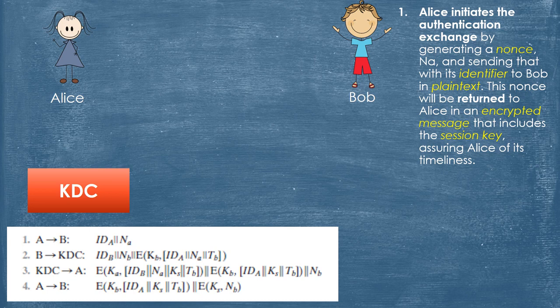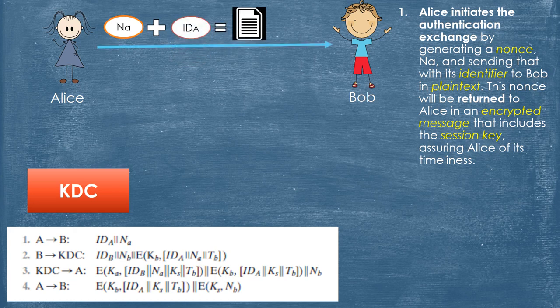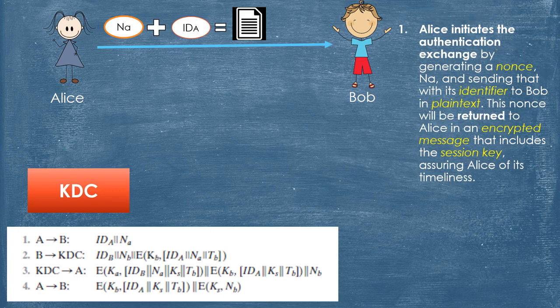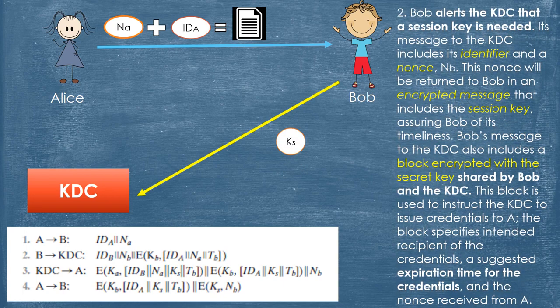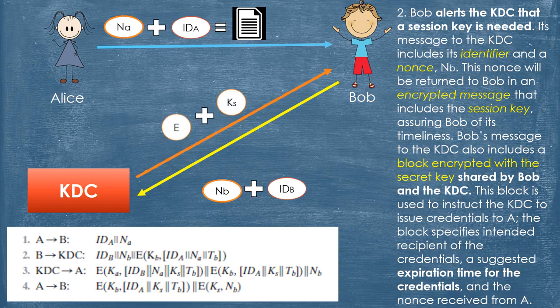Step 1: Alice initiates the authentication exchange by generating a nonce and sending it with her identifier to Bob in plain text. This nonce will be returned to Alice in an encrypted message that includes the Session Key, assuring Alice of its timeliness. Step 2: Bob alerts the KDC that a Session Key is needed. His message to the KDC includes his identifier and a nonce, which will be returned to Bob in an encrypted message that includes the Session Key, assuring Bob of its timeliness. Bob's message to the KDC also includes a block encrypted with the secret key shared by Bob and the KDC, used to instruct the KDC to issue credentials to Alice.